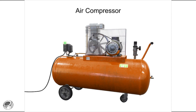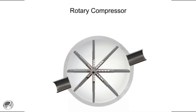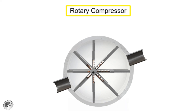Compressors with a piston as the compressing element are called reciprocating compressors. Compressors can also be made with vanes or impellers. These types of compressors are called rotary compressors.